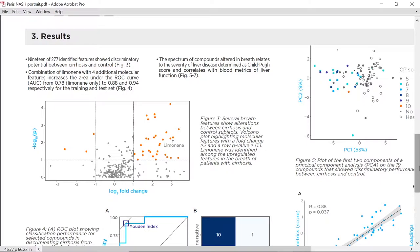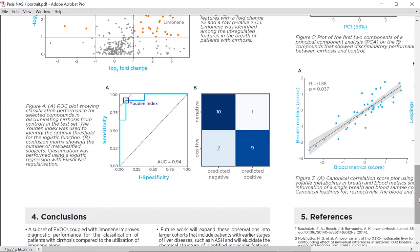As we can see in the volcano plot shown in Figure 3, some of the 277 compounds identified were up-regulated or down-regulated in patients with cirrhosis at the indicated thresholds. Nineteen of these showed discriminatory potential for cirrhosis. Top four compounds showing the best classification performance were selected and coupled with limonin.